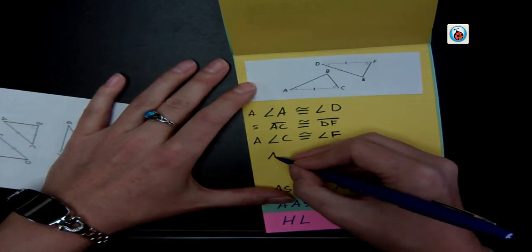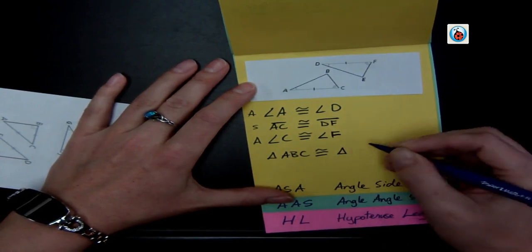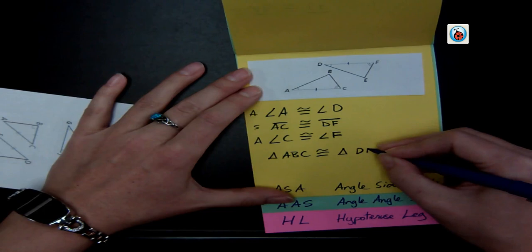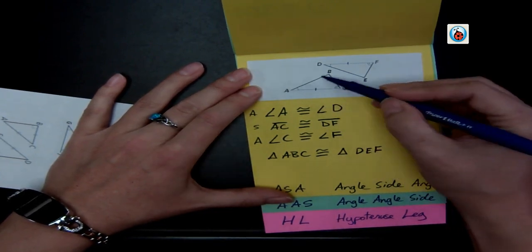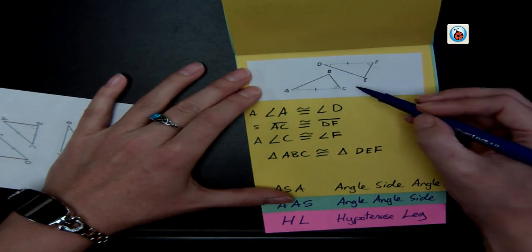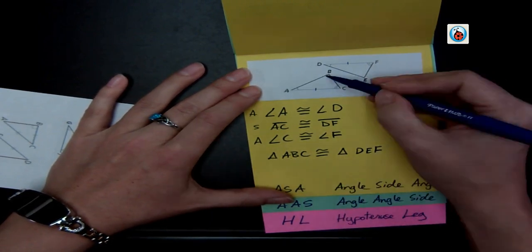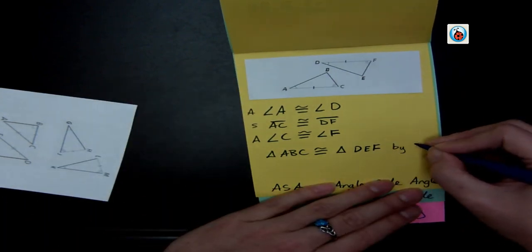And so triangle ABC is congruent to triangle D, E, F. And I make sure, again, I'm matching up the matching angles. So F and C match up, D and A match up, B and E are those third angles in the middle. And that is by angle, side, angle.